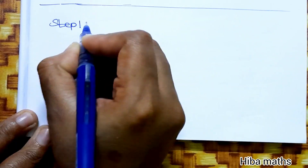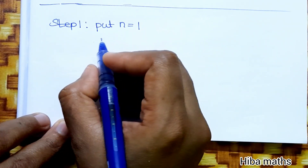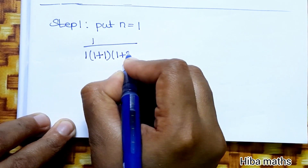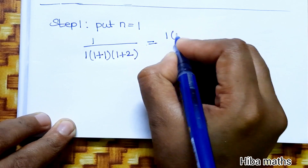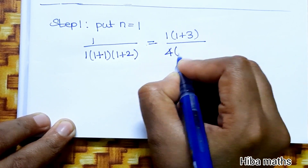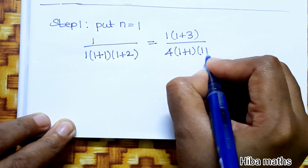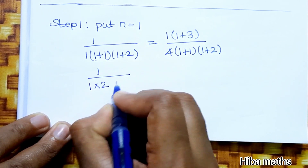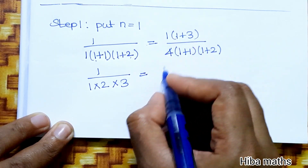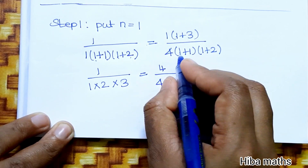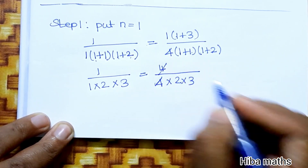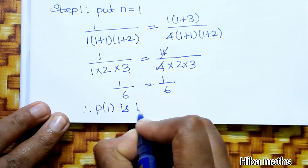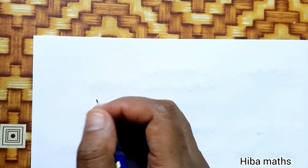Step 1: Substitute n = 1. LHS = 1/(1·2·3) = 1/6. RHS = 1·(1+3) / [4·(1+1)·(1+2)] = 1·4 / [4·2·3] = 4/24 = 1/6. LHS equals RHS, therefore P(1) is true.